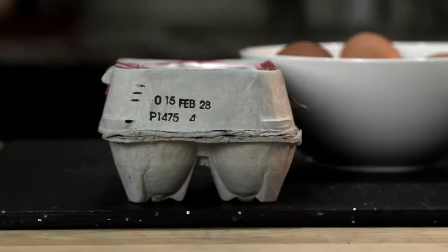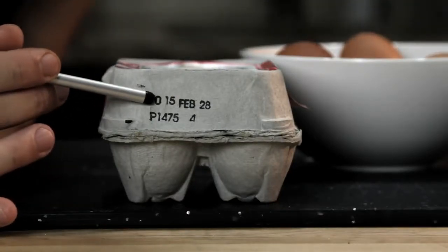There are two ways to tell how fresh an egg is. The first is to check something called the Julian date. As long as it's packed in the US, every carton of eggs has a number between 000 and 365 on it. And that number corresponds to the day on which the egg was cleaned and packed.